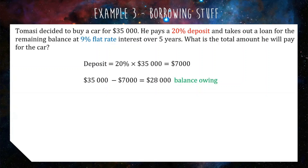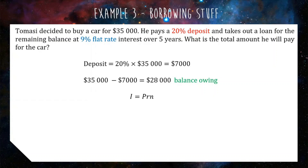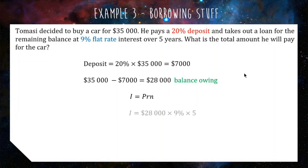We are going to be finding 9% flat interest — when I say flat, that's just another way of saying simple interest, not compound. So we're going to find 9% simple interest on $28,000 over five years using the simple interest formula: I equals PRT. Our principal is the $28,000 — the balance owing, not $35,000. Interest rate is 9%, time period is five years. So we do 28,000 times 9% times 5, and we get an answer of $12,600.